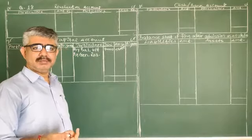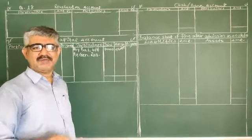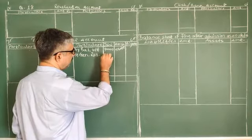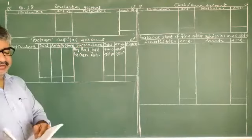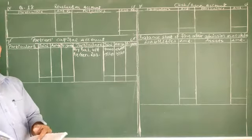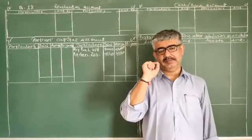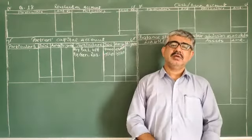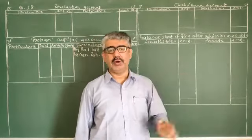You can calculate along with me using your calculator. 8,400 into 3/5 is 5,040 and 8,400 into 2/5 is 3,360. Distribution is done. Next is Investment Reserve: 4,200. Remember the concept — whenever the value of investment increases, there is no need to use the investment reserve; the entire amount is to be distributed to the old partners.